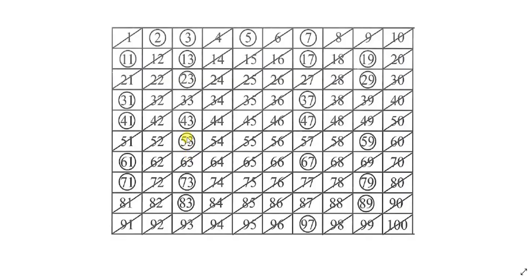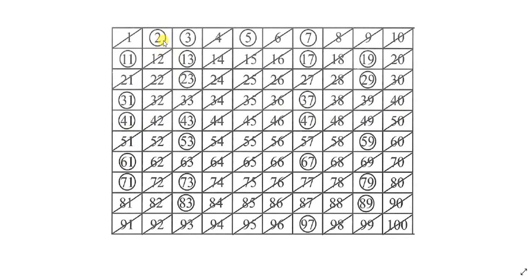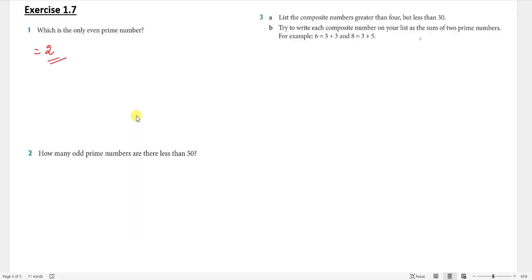Question 2: how many odd prime numbers are there less than 50? Less than 50 means we count up to 47 only. Since we need odd prime numbers, we exclude 2. Counting them: 1, 2, 3, 4, 5, 6, 7, 8, 9, 10, 11, 12, 13, 14 — the answer is fourteen.